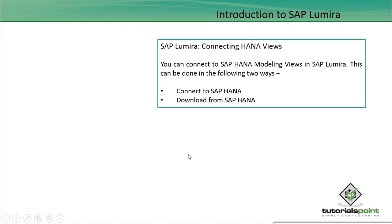You can connect to SAP HANA modeling views in SAP Lumira in two different ways. The first one is you connect to the live data on SAP HANA using the option 'Connect to SAP HANA'. After that there is the option 'Download from SAP HANA', where you can download the data set and use it in SAP Lumira.